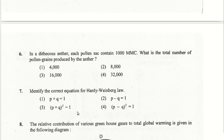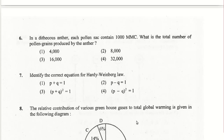For the Hardy-Weinberg equilibrium equation: p² + 2pq + q² = 1 is the correct form, so the third option is right. The first option p + q = 1 is also not wrong, since it's the square root form. Both first and third options are correct answers for question 7.